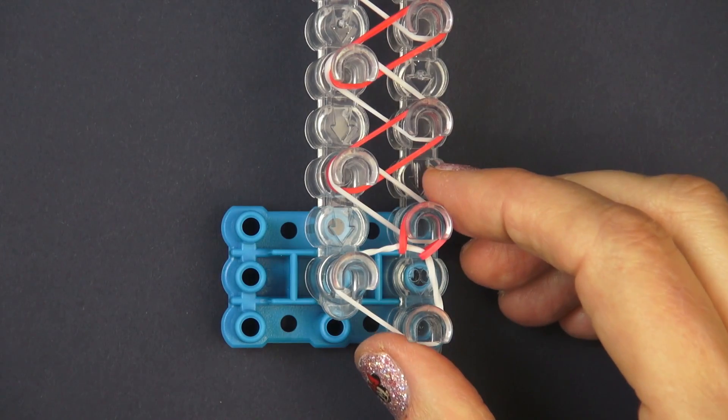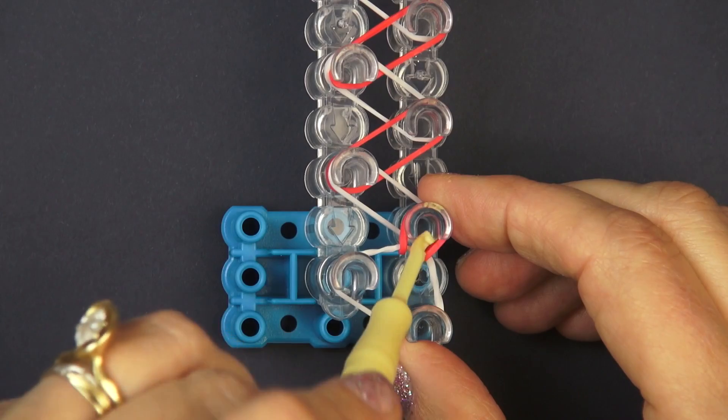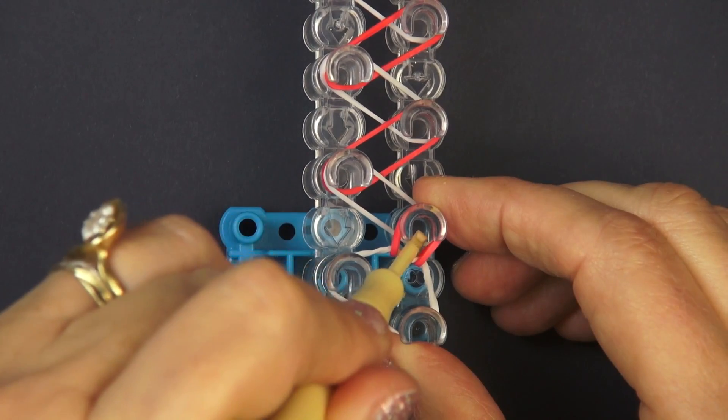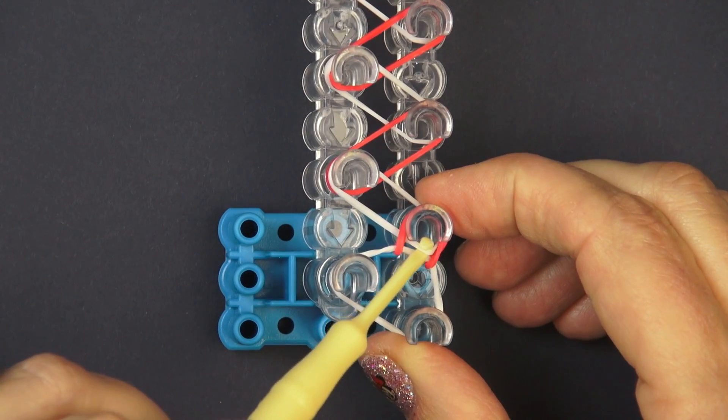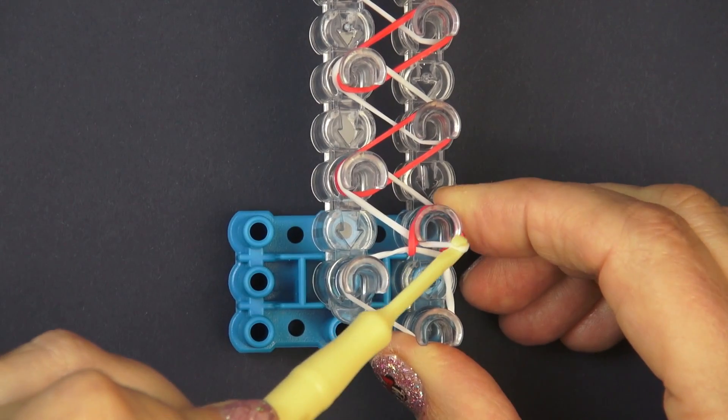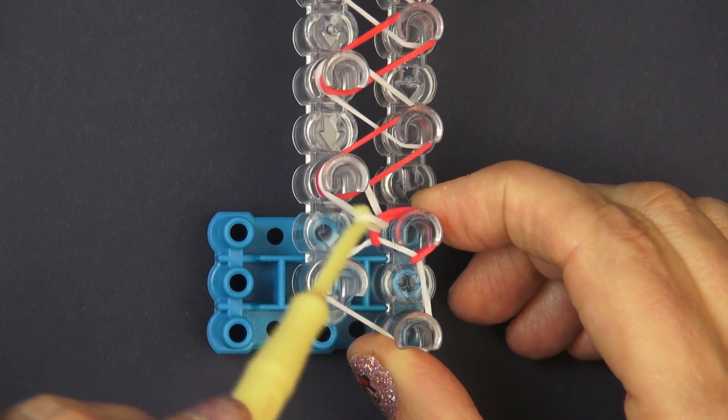Now since that was a red rubber band I know that I'm going to be picking up a white rubber band that's at the bottom and I'm going to hold these rubber bands down so that they don't come off of this post.